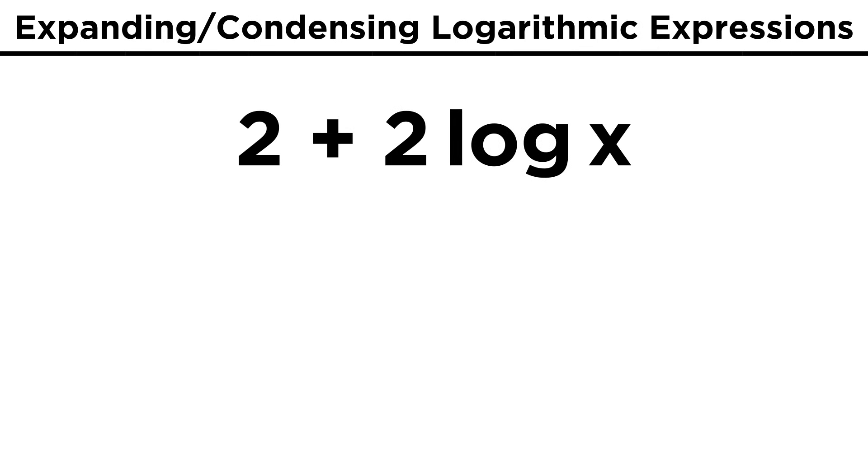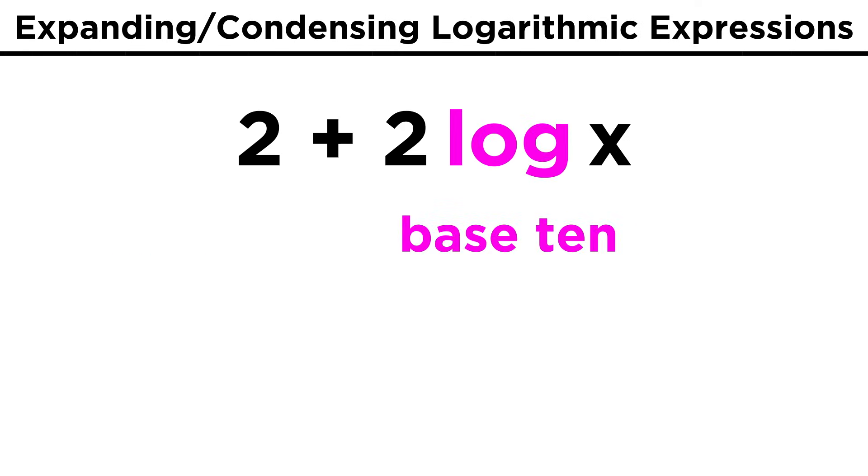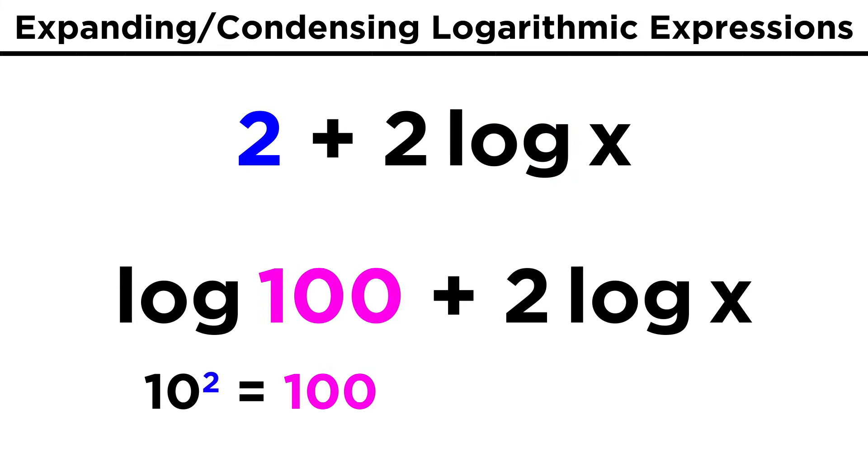Just for fun, let's take some other expression and see if we can get it to condense into a single log. How about two plus two log X? If we want to combine these into one term, we need logs on each term, so two has to become a log. The other log is implied to be base ten, so how can we express the number two as a log base ten? Well ten squared is a hundred, so log of a hundred is the same as the number two. That gives us log of a hundred plus two log X.